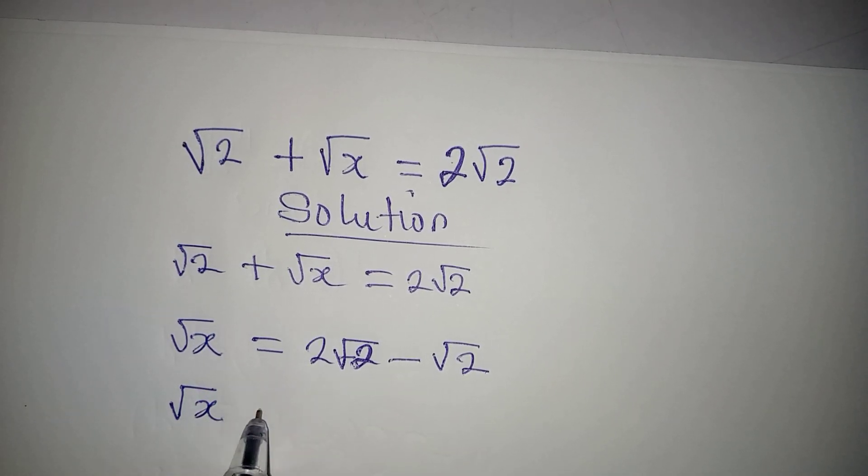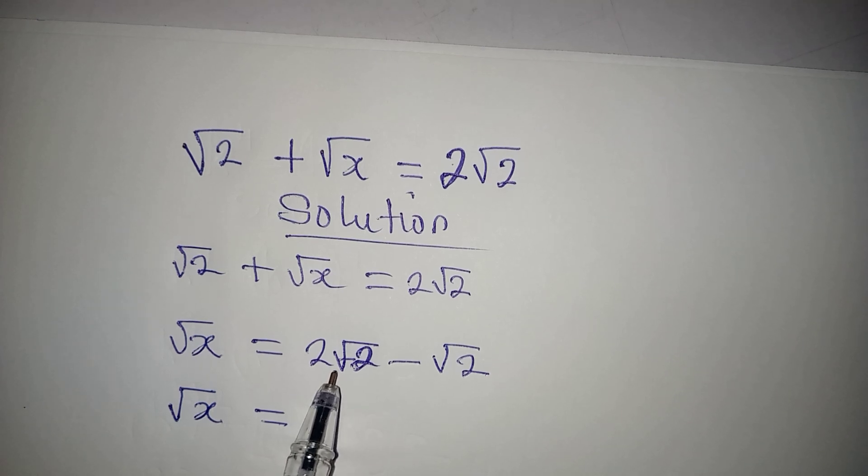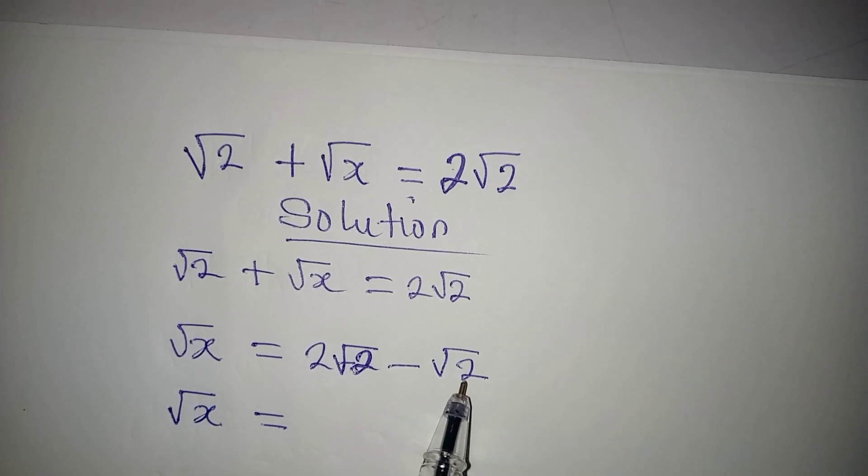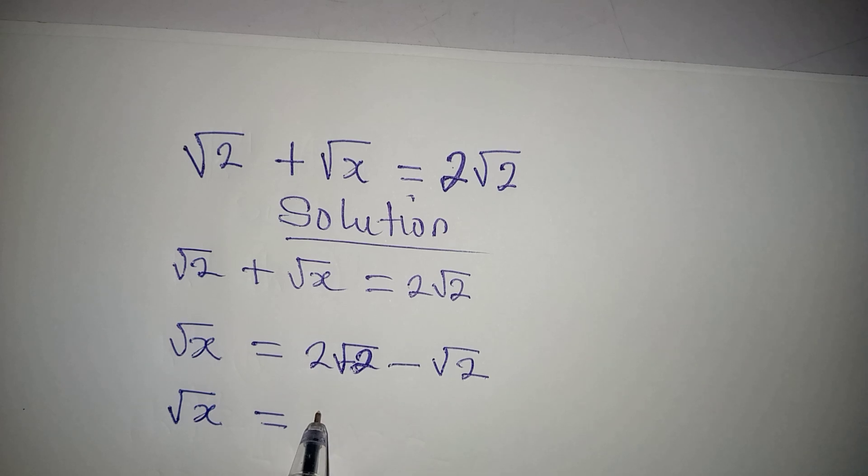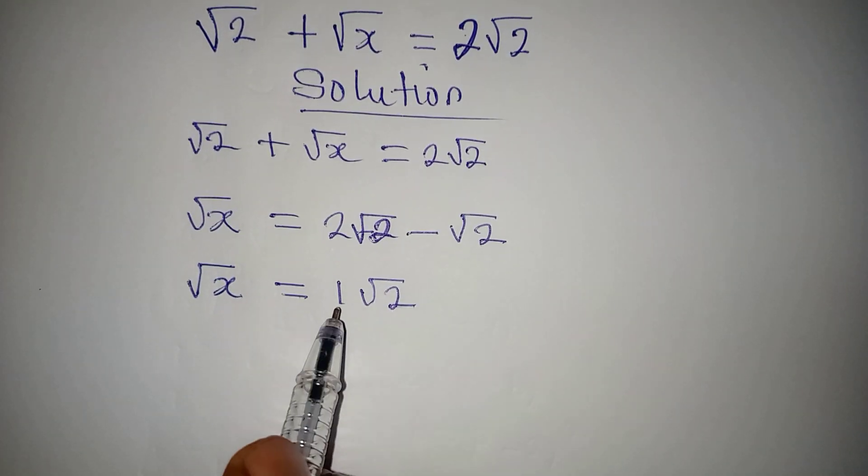Now square root of x is equal to, from here we have 2 square root of 2 minus 1 square root of 2. This will give us 1 square root of 2.